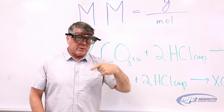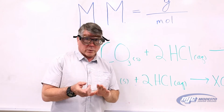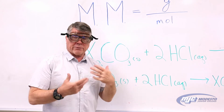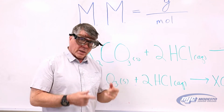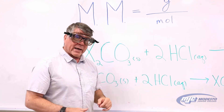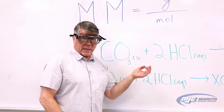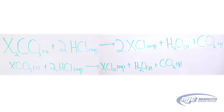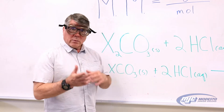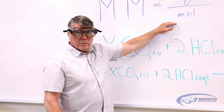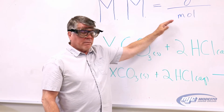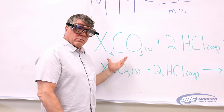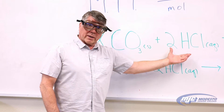Here's where the ideal gas law comes in. We're going to take the unknown carbonate and react it with hydrochloric acid. And the way that we're going to find how many moles of our unknown carbonate we have is by reacting the unknown carbonate with hydrochloric acid.